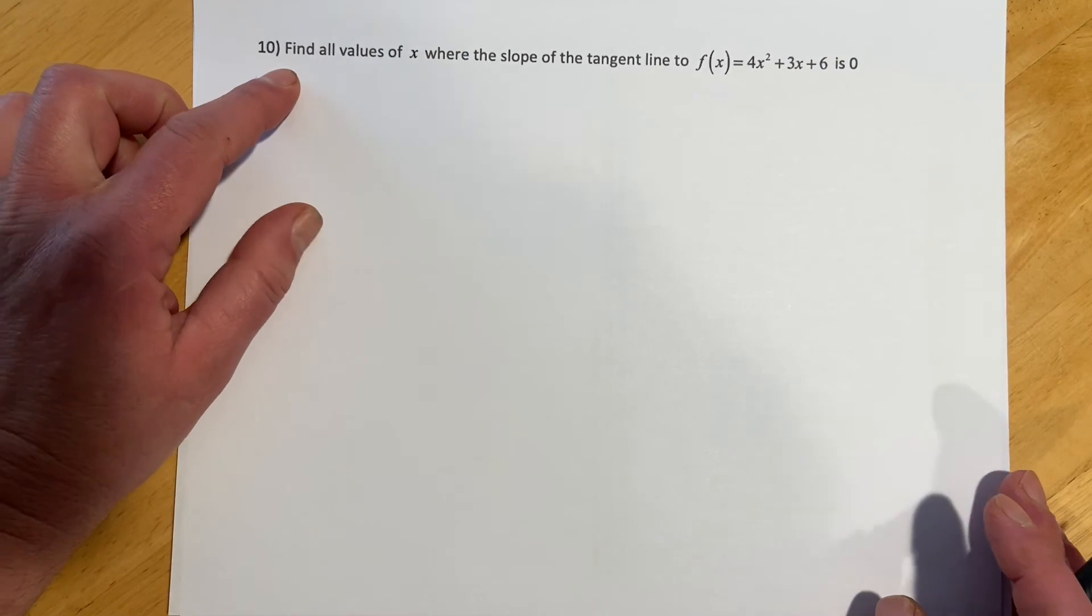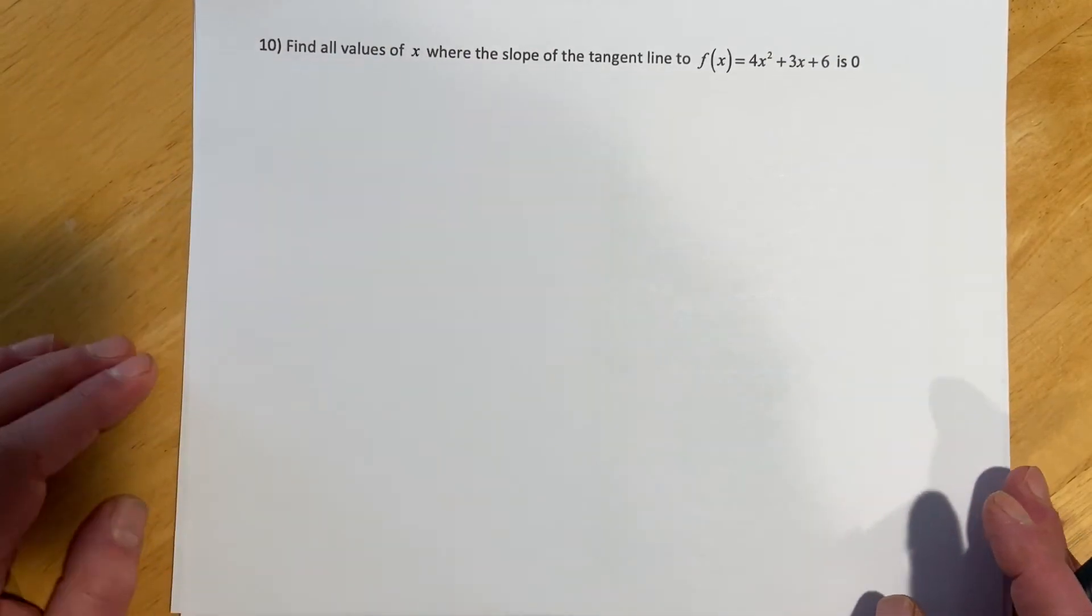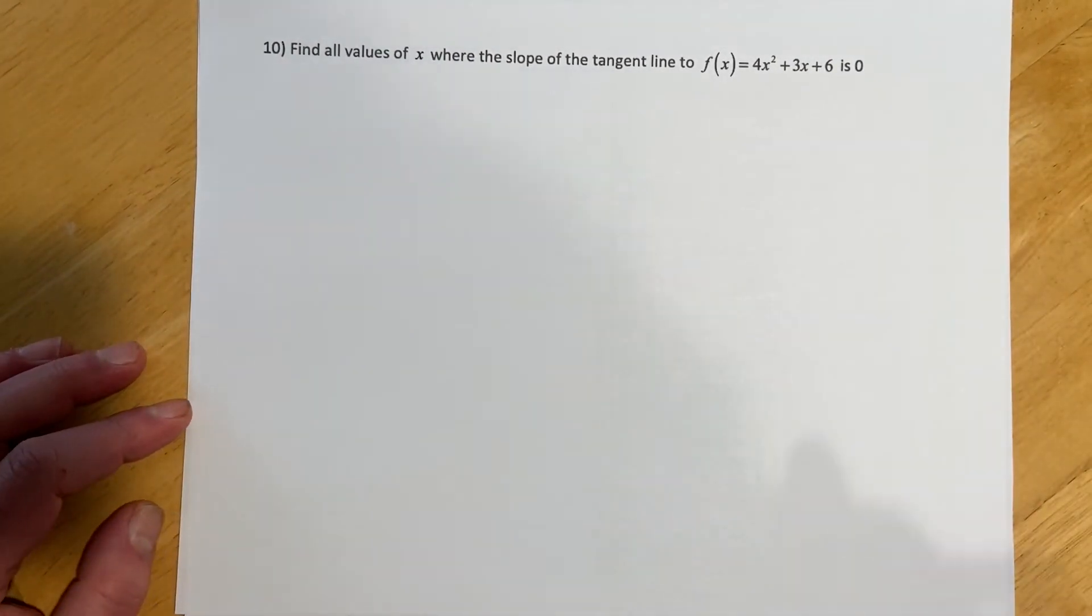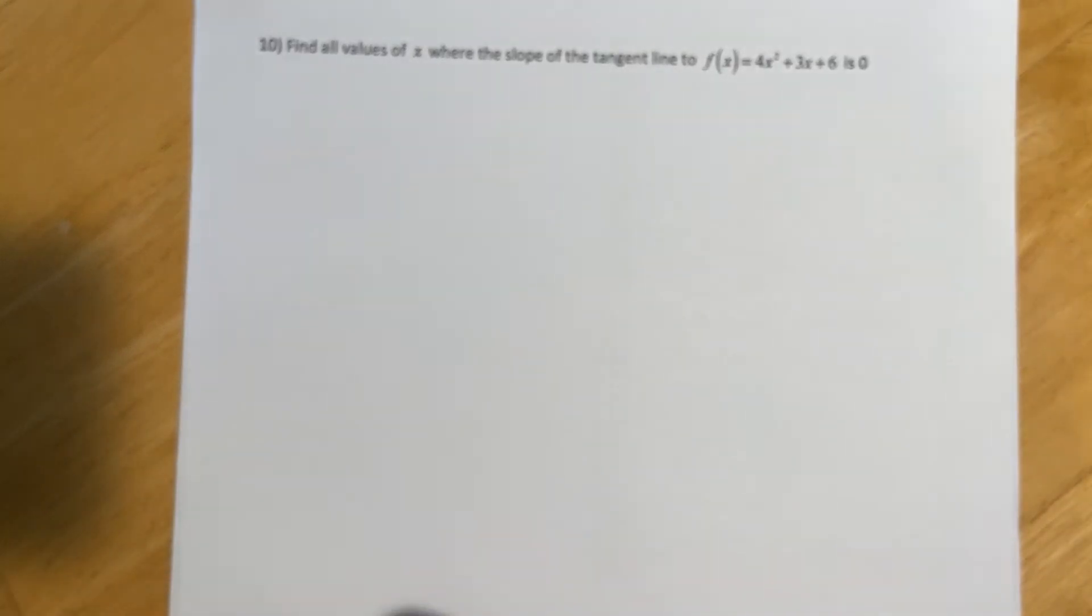So this question is asking me to find all values of x where the slope of the tangent line to this function is 0. So if the slope is 0, that means the derivative would be equal to 0, which means I need to find the derivative.